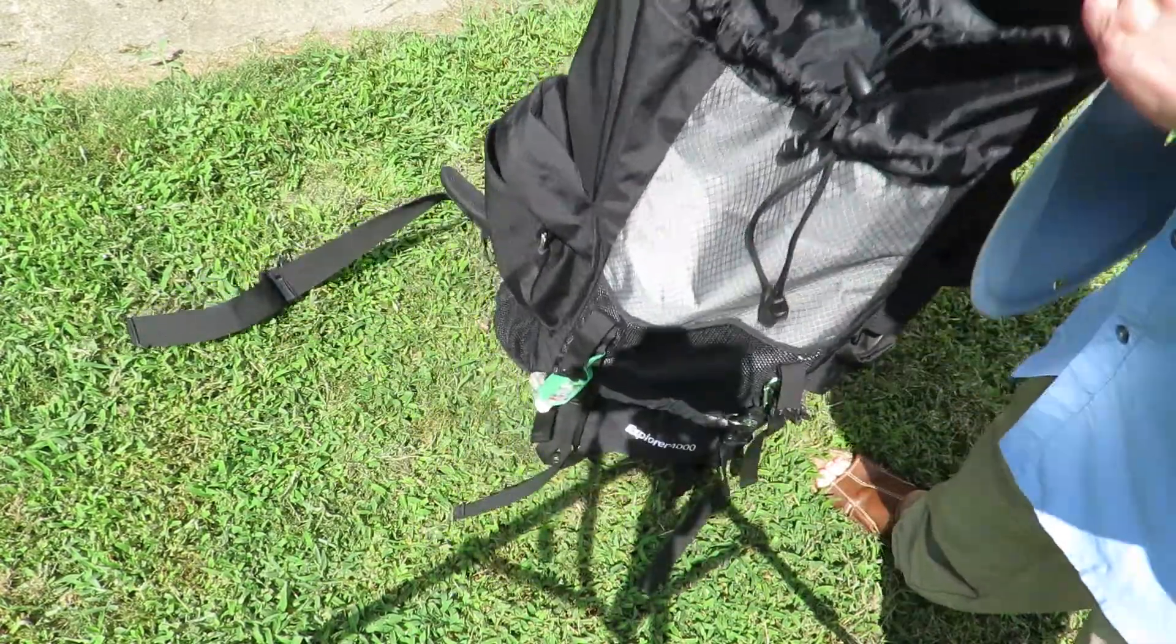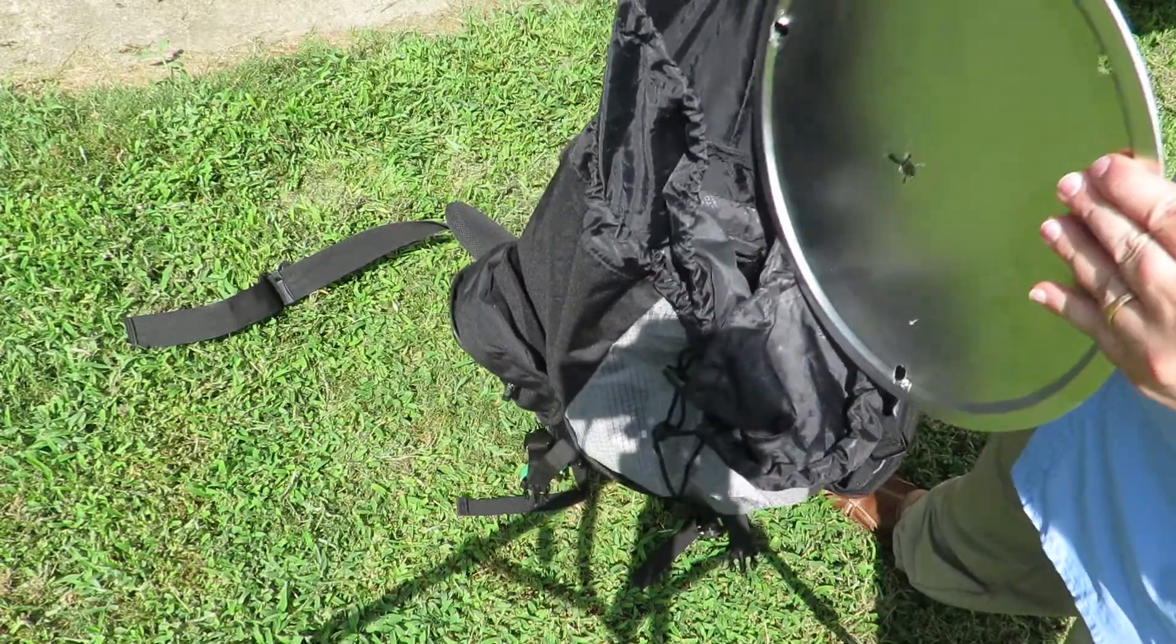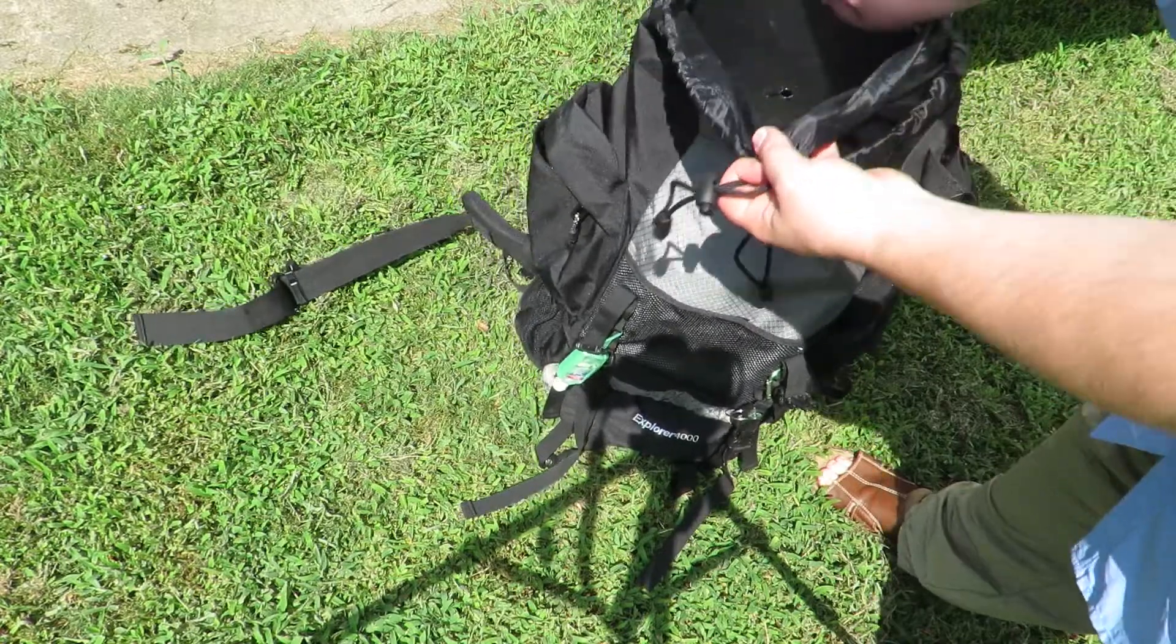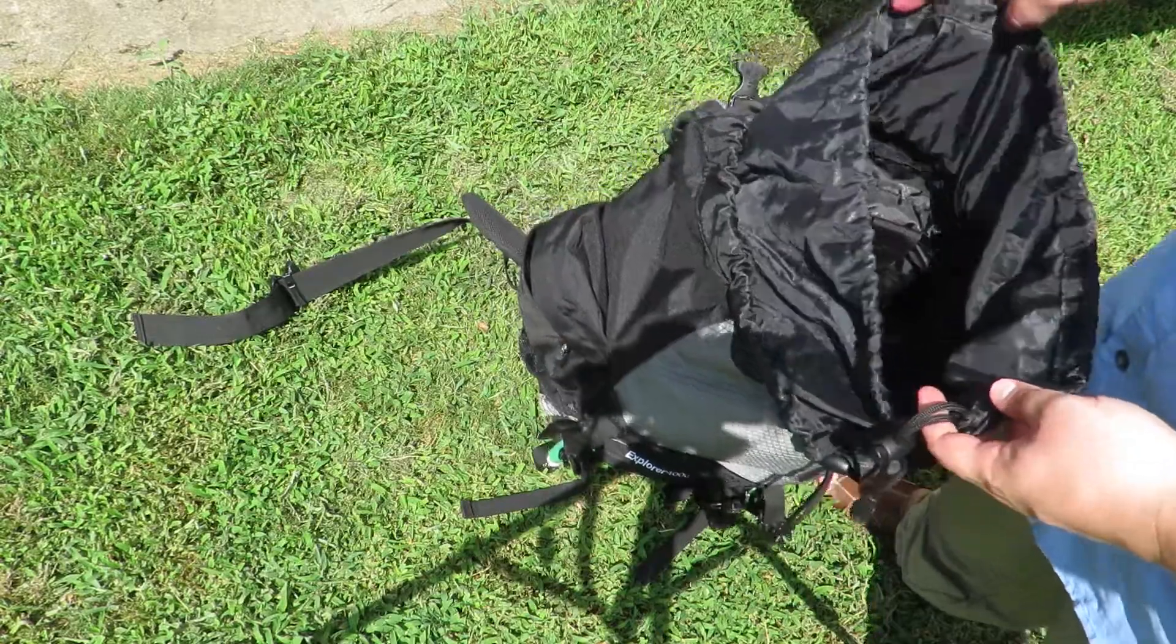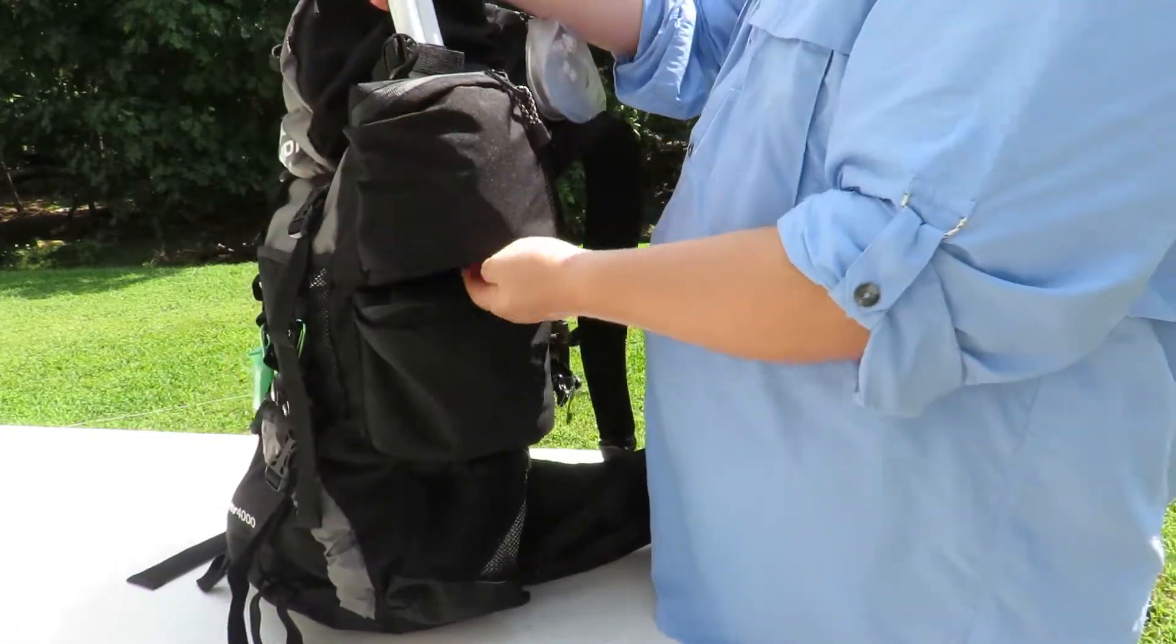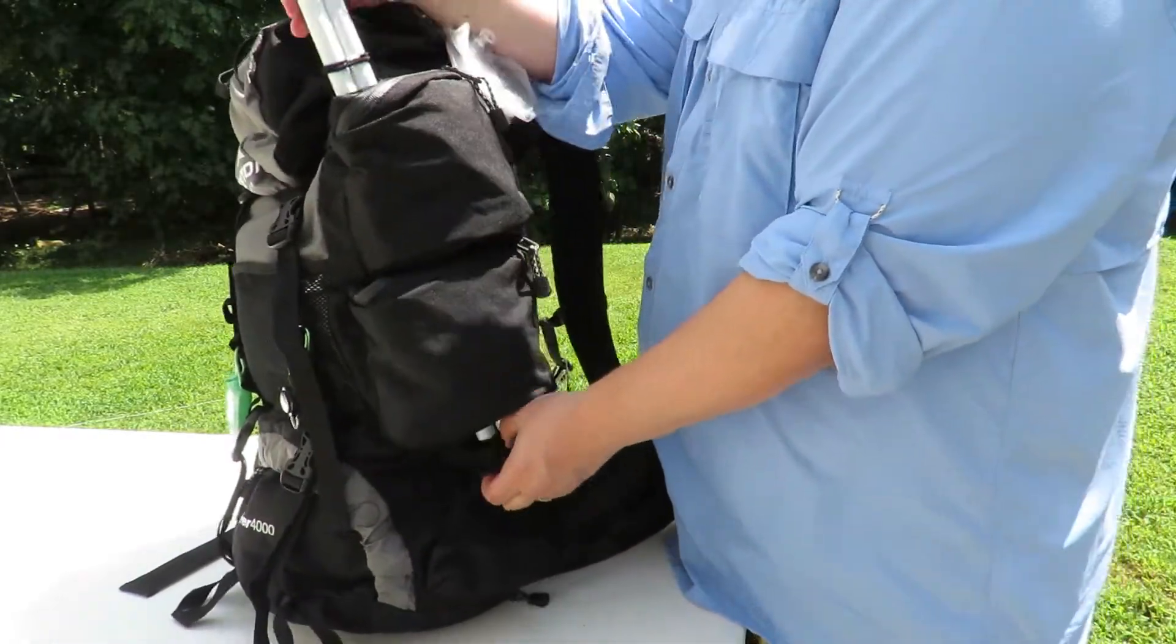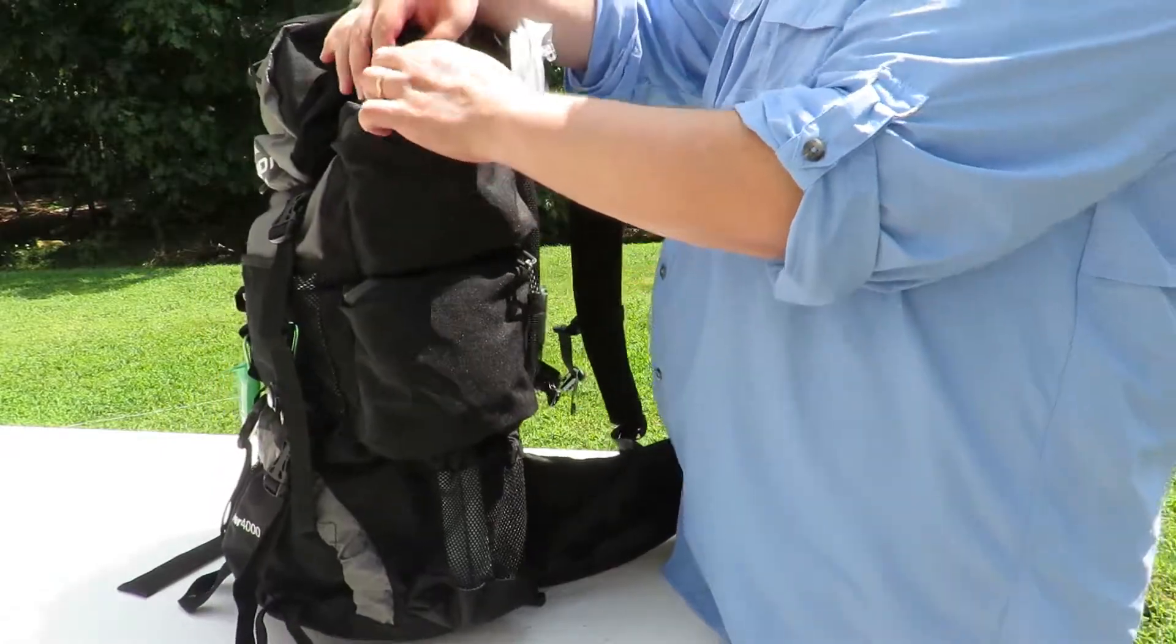I have the Teton Sports 4000 Explorer backpack. The table top will slip right down in the hydration pouch. I don't use that anyway, I usually take water bottles. The Explorer 4000 backpack also has a spot behind the pockets on the side where you can slide poles, so I put the poles right in there.